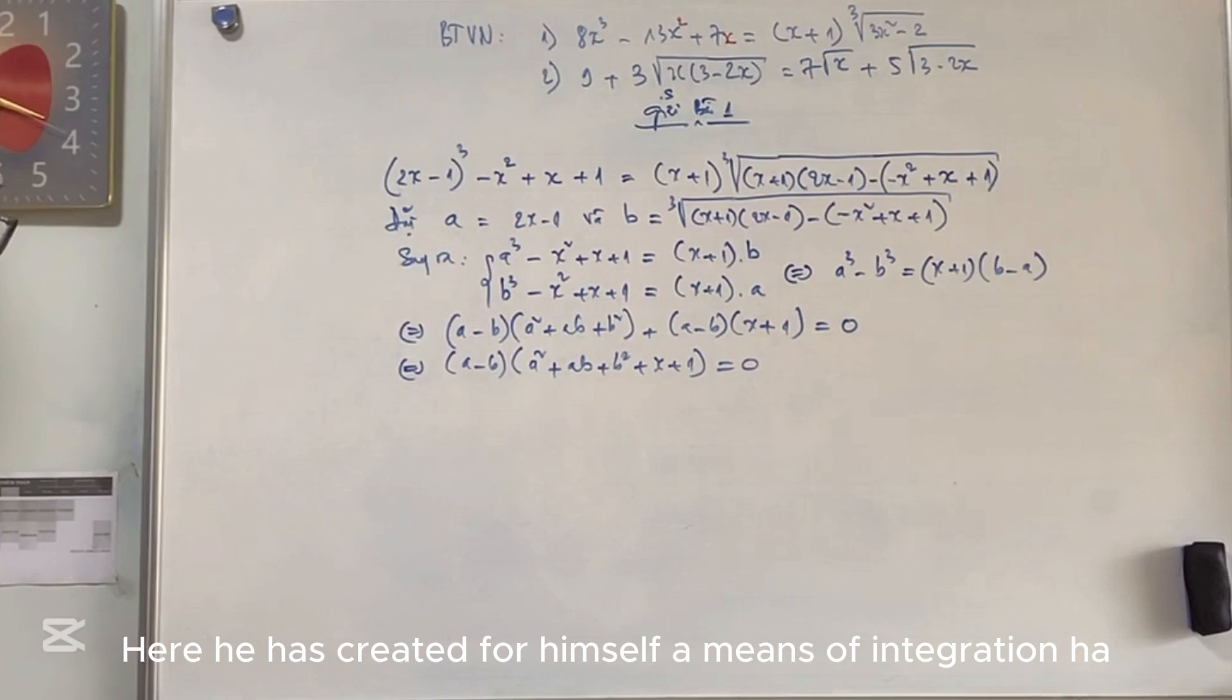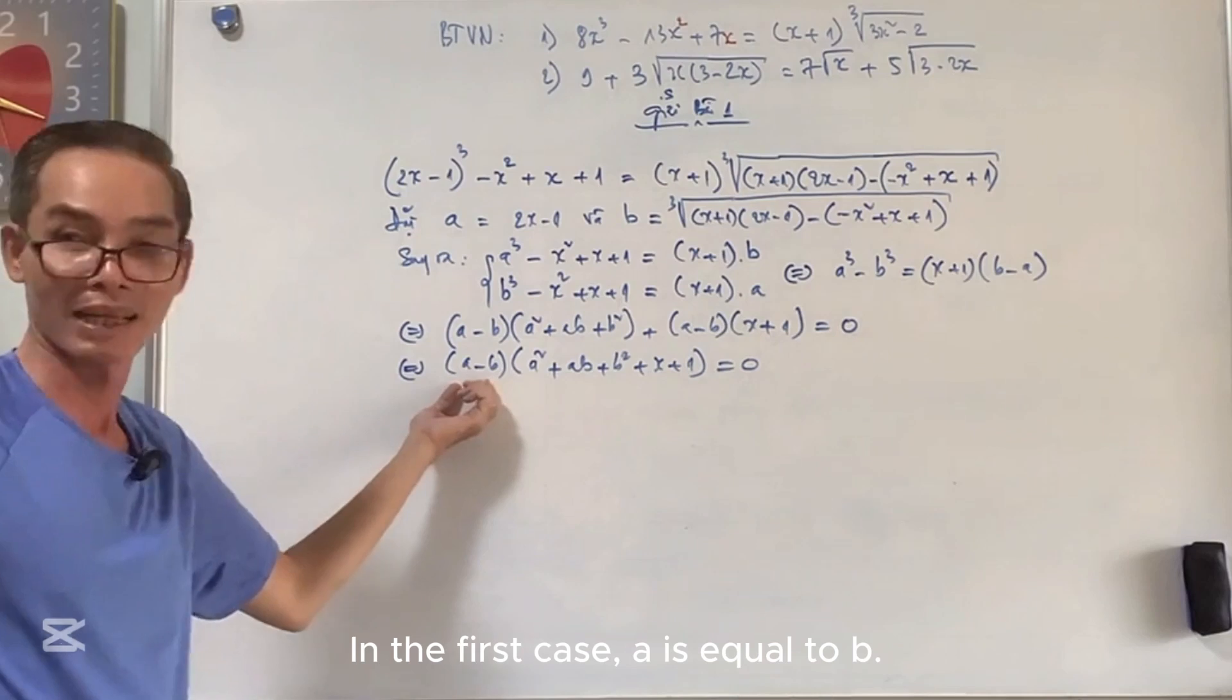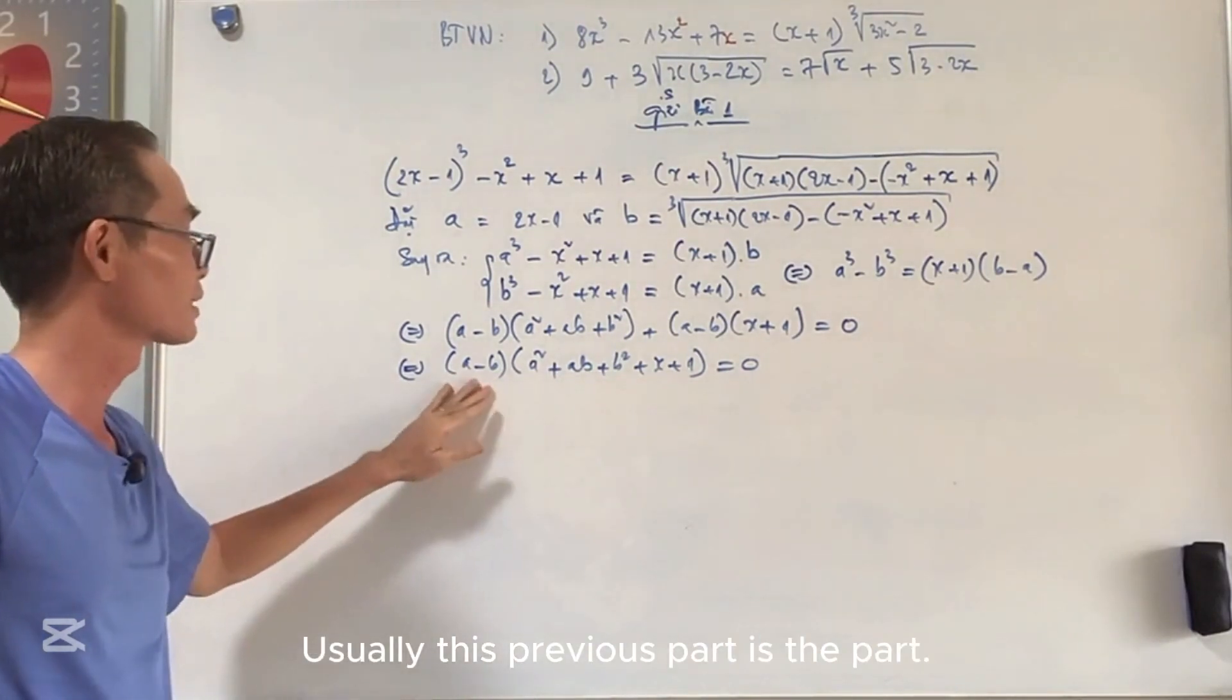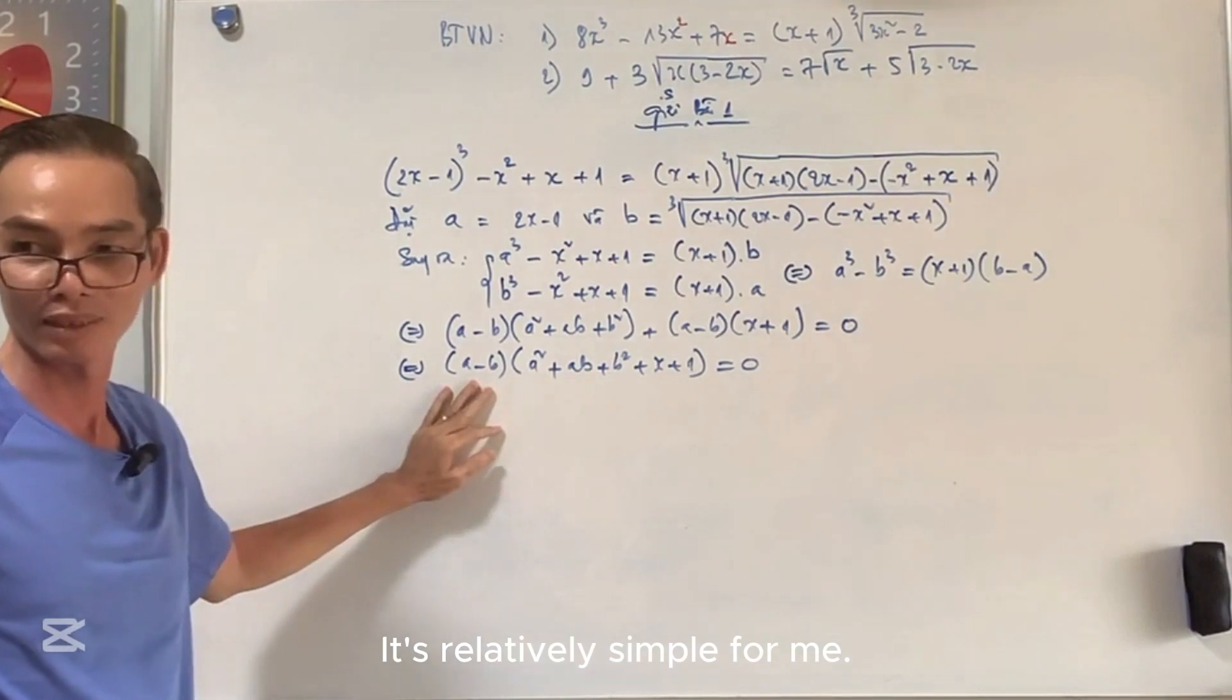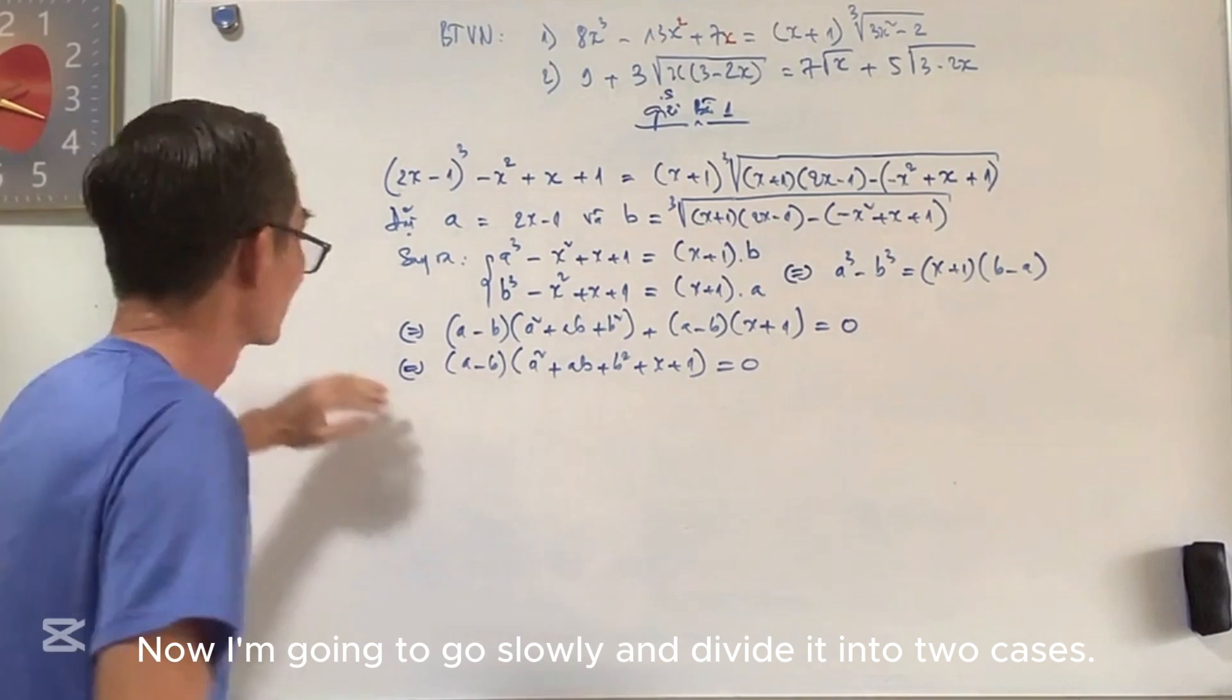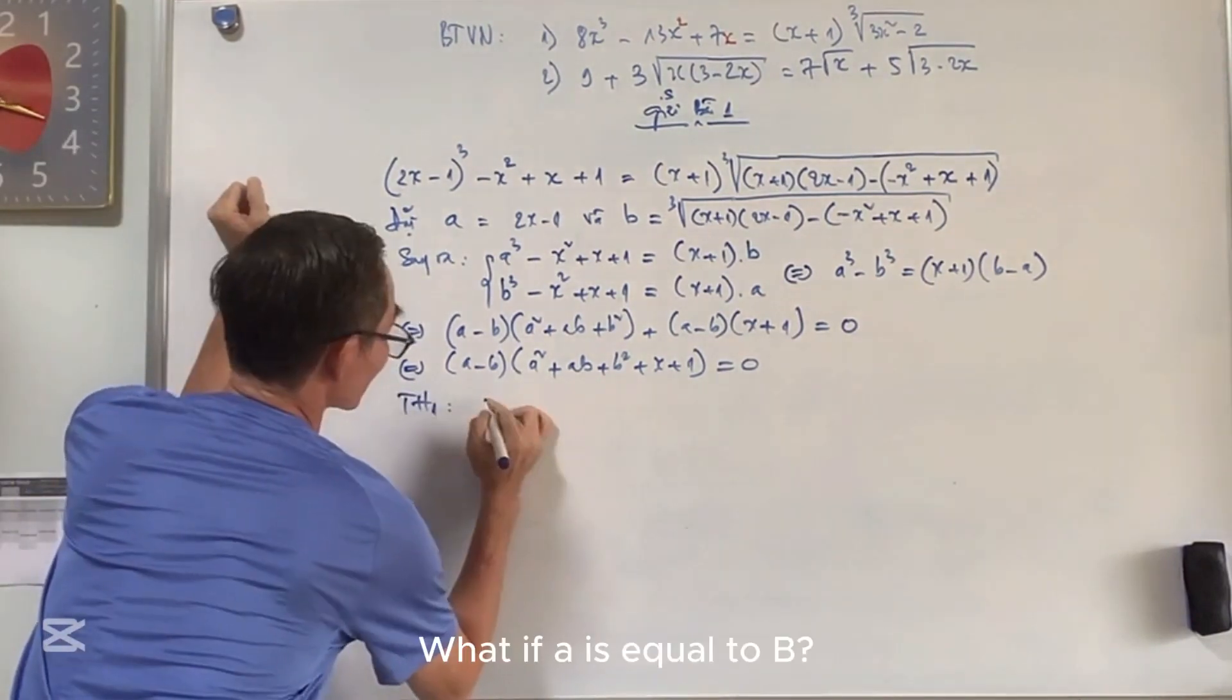Come now. Here he has created for himself a means of integration. I solve two cases. In the first case, a is equal to b. The second case is the one where this equals 0. Usually this previous part is the part that's relatively simple for me. And in the later part, it's a little bit more complicated. Now I'm going to go slowly and divide it into two cases.